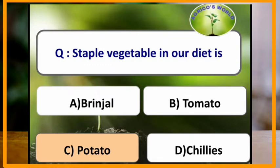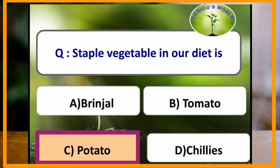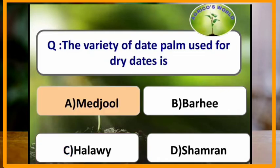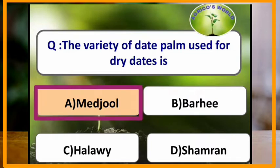Staple vegetable in our diet is potato. The variety of date palm used for dry dates is Medjool. Medjool is the variety of date palm used for dry dates.